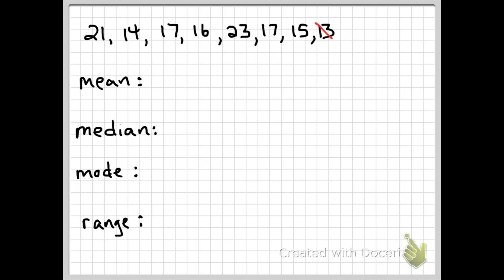So the first thing you want to do is put these in order from smallest to biggest. You can go largest to smallest but I prefer to go small to biggest. So 13, cross them out as you go. 14, 15, 16, we have 17, we're going to list that both times.